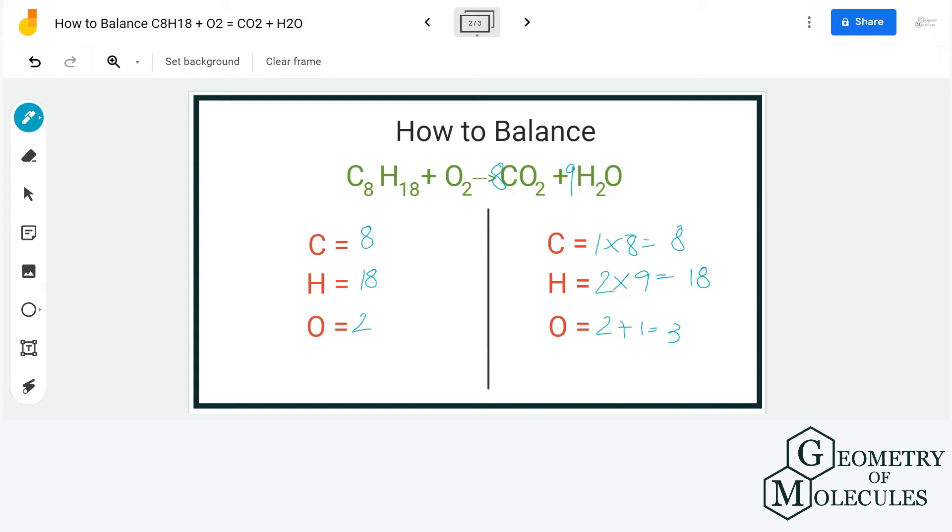Now we have balanced the number of carbon and hydrogen atoms on both sides, but if you look at oxygen atoms, there is still a long way to go. For oxygen, we have 8 times 2, that is 16, plus 9 which is in the water molecule, so we have 25 atoms of oxygen over here. But on the reactant side, we only have 2 atoms of oxygen.